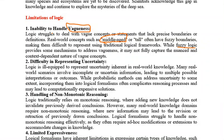The next limitation is difficulty in representing uncertainty. Uncertainty means not getting a correct or complete result — like a weather forecast, which I explained previously. Many real-world scenarios involve incomplete or uncertain information, leading to multiple possible interpretations or outcomes. When we have multiple outcomes, it is very difficult to choose one suitable outcome because we don't have certain or correct information.